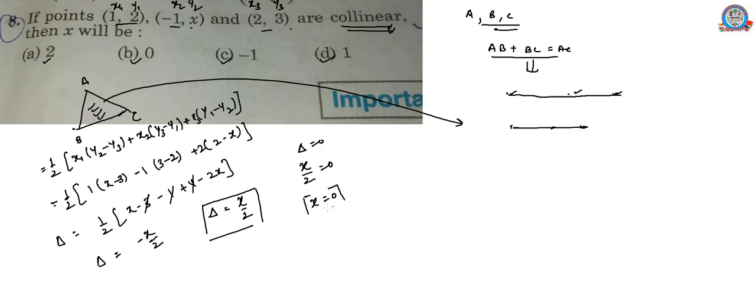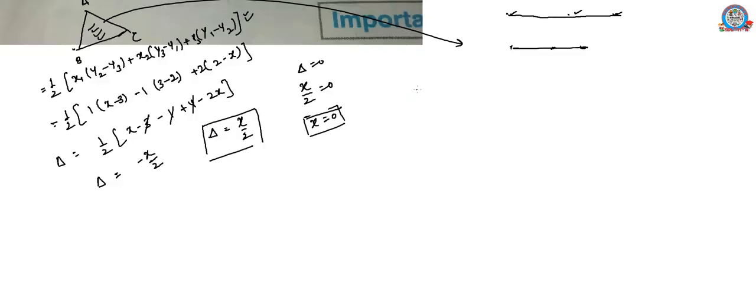So area of triangle should be 0, that means x by 2 should be 0, so x should be 0. By this formula we can solve this problem easily - x is 0. Now look at another solution.